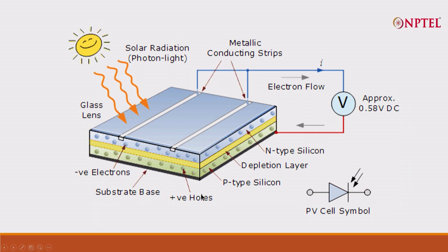Essentially, this is what a solar cell looks like. Basically, there is a p-type silicon, which is a silicon cell, and then there is an n-type silicon.